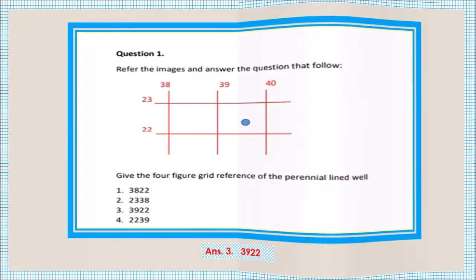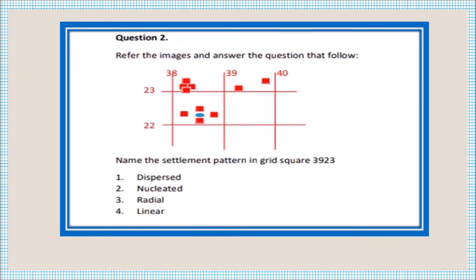The second question: name the settlement pattern in grid square 3923. The eastings are 39 and the northings are 23, so that area falls under 3923. What type of settlement pattern is seen here? You can see the houses are far from each other, so we call this type of pattern a dispersed or scattered settlement.